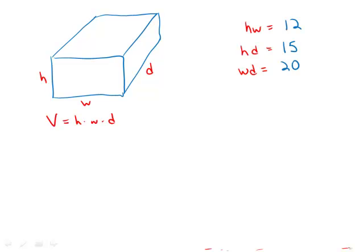But here's something that you can always use. Notice that if we just multiply these three, so h times w times h times d times w times d, that equals 12 times 15 times 20. 12 times 15 is 180 times 20, which is 3600.